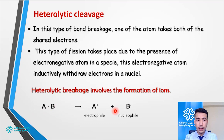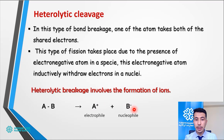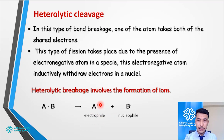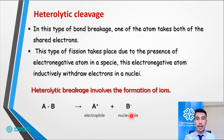In the diagram, there are two atoms A and B. When the bond is broken in heterolytic cleavage, atom A has lost an electron and atom B has gained an electron. So A becomes a positive ion, or cation, and B becomes a negative ion, or anion. Now A is an electrophile — it likes electrons because it needs them — and B is a nucleophile — it likes the nucleus because it has an extra electron or negative charge.